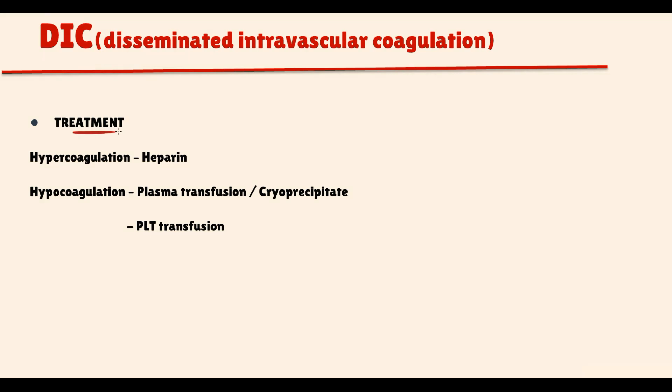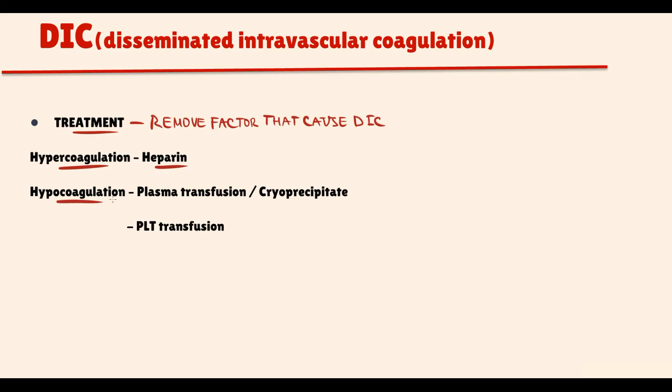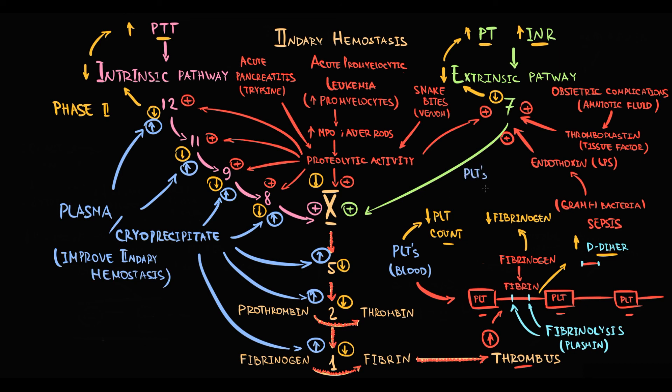The treatment depends on the phase of DIC. But in both cases, we should treat the underlying factors that provoke DIC. If it's phase 1 with extensive clotting, to correct this we can provide infusion of heparin. Heparin activates antithrombin, and in response to this, the inhibitory effect of antithrombin becomes more potent, so factors 2 and 10 become less active. Thereby fibrin formation will decrease and without fibrin, thrombus cannot be formed. If it's phase 2 with hypocoagulation, then we should provide transfusion of plasma or cryoprecipitate. This will increase the concentration of clotting factors and thereby improve secondary hemostasis. We should also provide transfusion of platelets that will increase the platelet count, thereby correcting primary hemostasis.